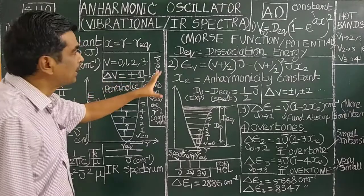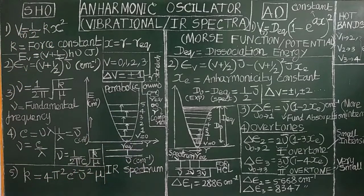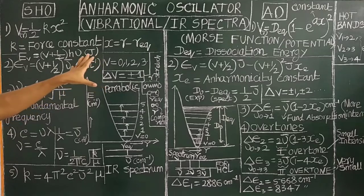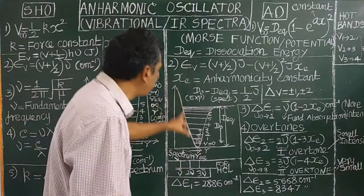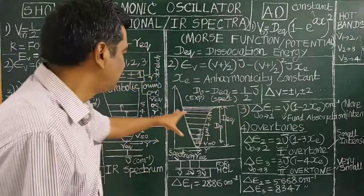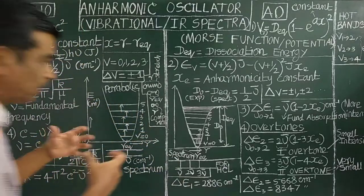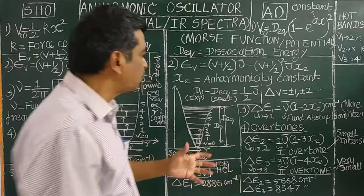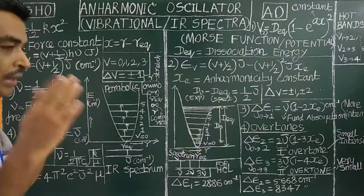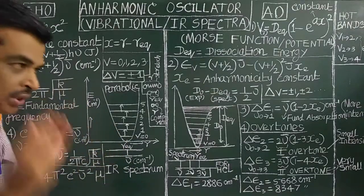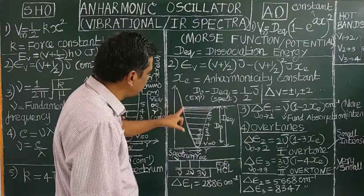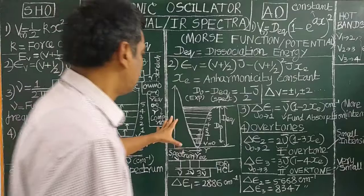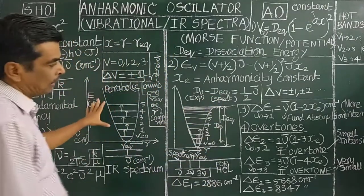The selection rule is delta V equal to plus or minus 1. Now let us compare the anharmonic oscillator. Real molecules are not elastic; they do not obey the laws of simple harmonic oscillation. Morse defined a potential — Morse gave an expression to fit the experimental curve for real molecules such as HCl and carbon monoxide. These are IR-active because they possess a dipole moment. All molecules possessing a dipole moment are IR-active.